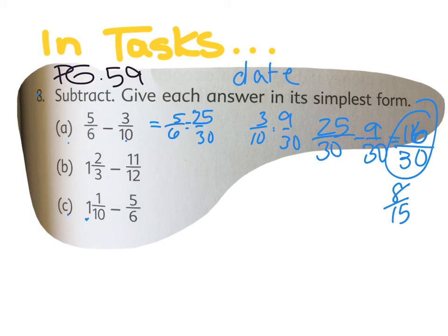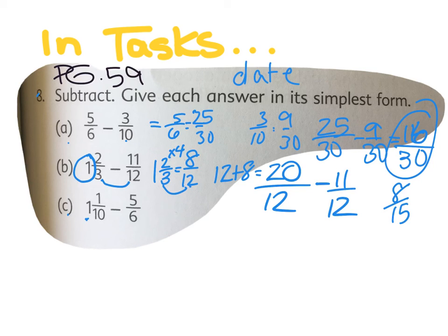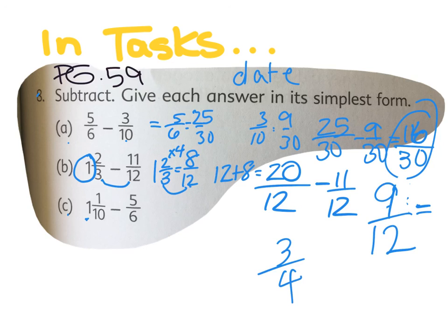Solution B: one and two thirds minus eleven twelfths. Find a common denominator — three goes into twelve evenly. One and two thirds equals how many twelfths? Multiply by four — eight twelfths. I cannot subtract eleven from eight, so I take the whole number. A whole in twelfths is twelve twelfths — twelve plus eight equals twenty twelfths. Subtract eleven twelfths: twenty twelfths minus eleven twelfths equals nine twelfths. Divide both by three — three fourths is the final answer.